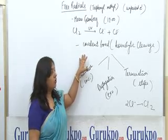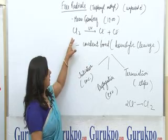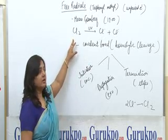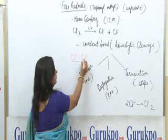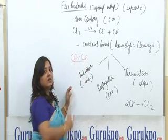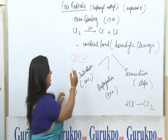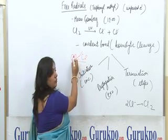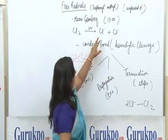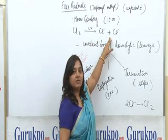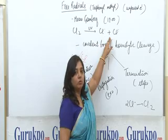Free radicals are produced when a covalent bond undergoes homolytic cleavage. In chlorine, there are two bonding electrons. Homolytic cleavage means equal distribution of electrons takes place — one electron goes to one chlorine atom and another electron goes to the other chlorine atom. Ultimately, both chlorine atoms have one electron each. This is called homolytic cleavage.